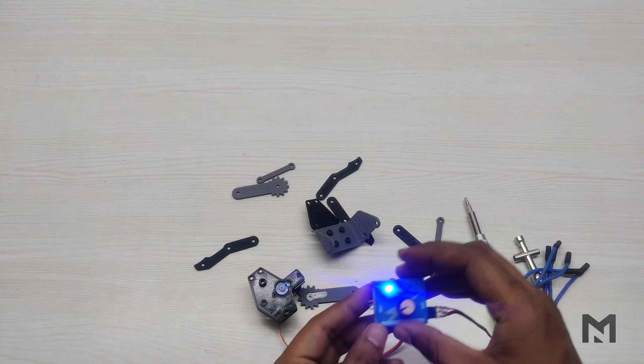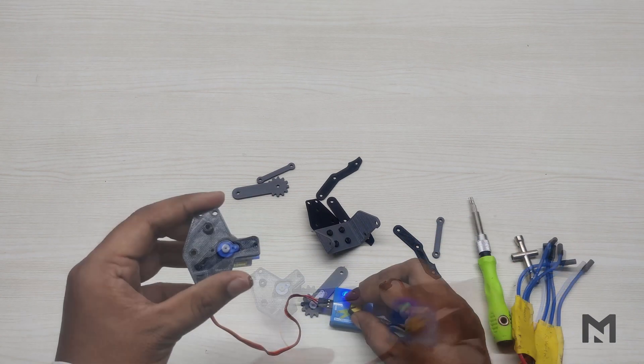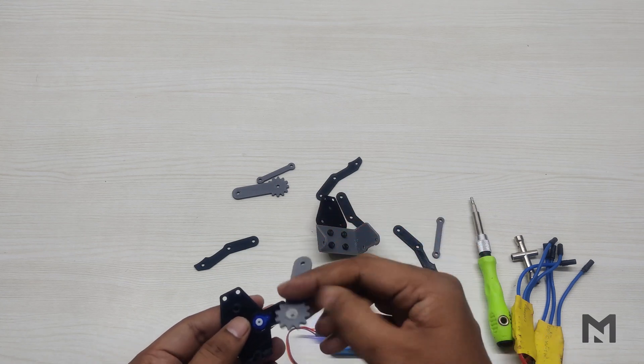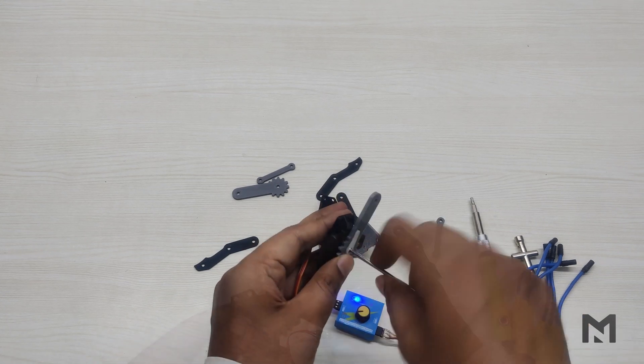Before placing the servo arm, I used a servo tester to find the perfect angle for the claw. Once you find the perfect angle, place the servo arm in its mount and fix it with its screw.